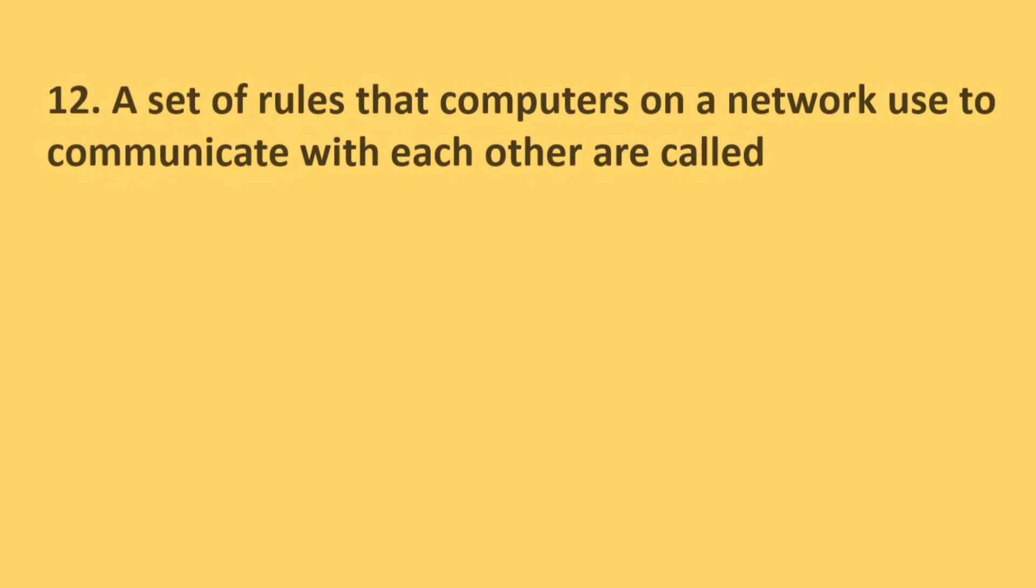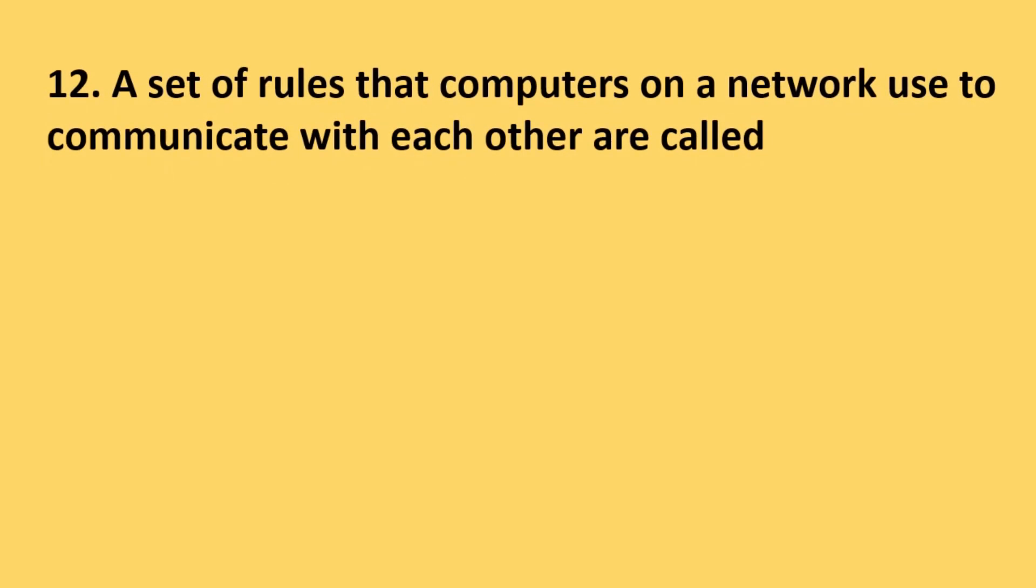Question number 12: A set of rules that computers on a network use to communicate with each other are called - options are rules, regulations, protocol and policy. The correct answer is option C, protocol.